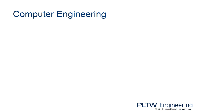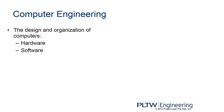Computer engineering is about how to design and organize computers — both from the hardware side, which covers the physical parts and how to most efficiently lay out transistors, chips, and circuit patterns, and from the software side, which covers what is installed into those physical devices. Computer engineering handles both of those aspects.